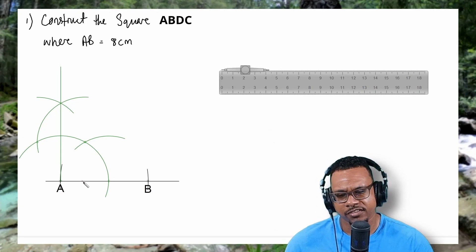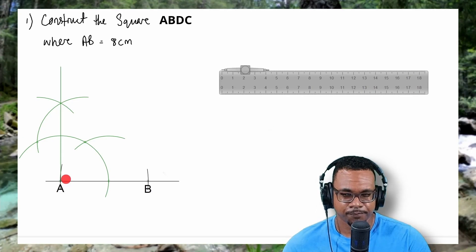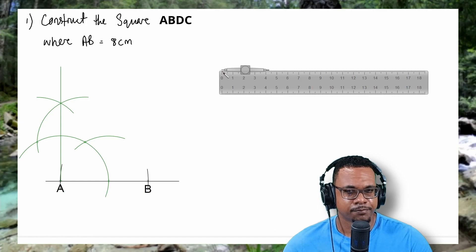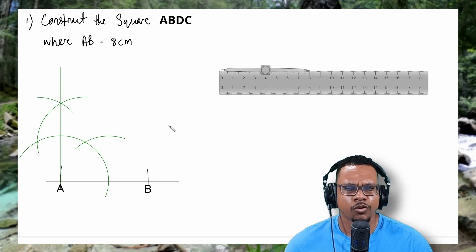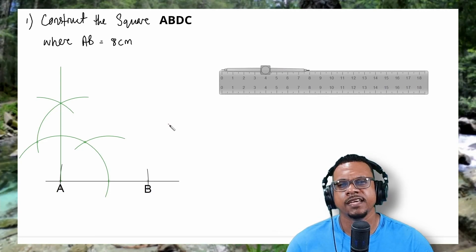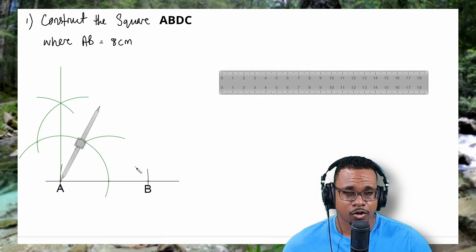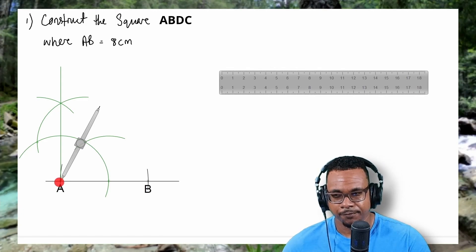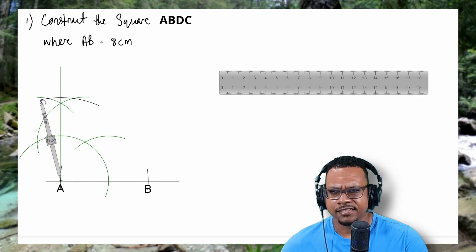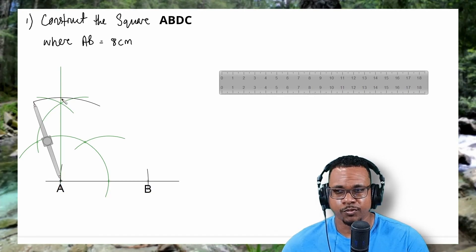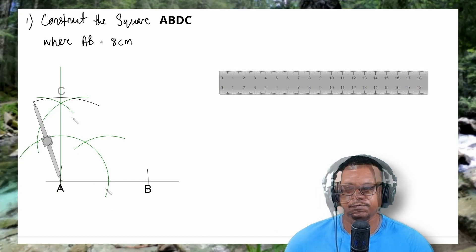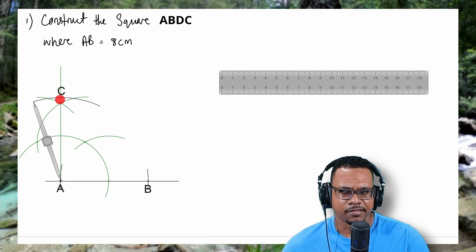Now that I've constructed my 90 degree angle at point A, I'm going to place my compass point back on the 0 on the ruler, and open my compass out to 8cm, because all four sides of the square are 8cm long. So I'll place my compass point back at A and make an arc to cut this line, so that the distance from point A to where the arc meets the line is 8cm. I'll call that point C.